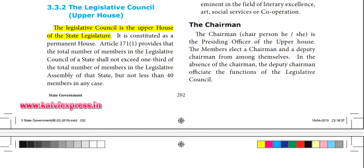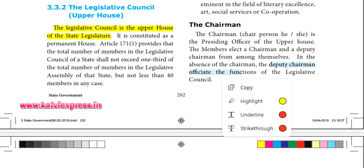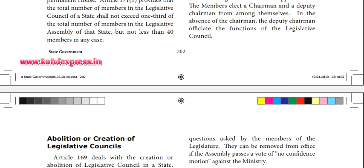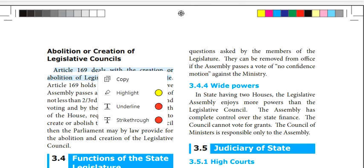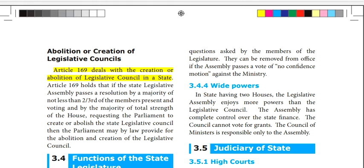The Chairman is the presiding officer of the MLC. Members elect the Chairman of the MLC. If the Chairman is absent, the Deputy Chairman presides over the legislative council.